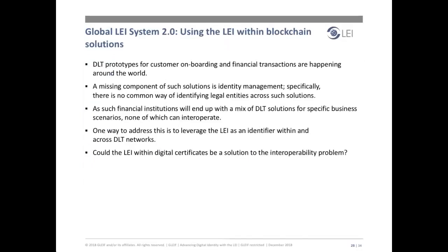Distributed ledger technology prototypes for customer onboarding and financial transactions can be seen around the world. Yet identity management is still a missing component — there is no common way of identifying legal entities across such solutions. As a result, financial institutions will end up with a mix of DLT solutions for specific business scenarios, yet none of them will be interoperable. One way to address this is to leverage the LEI as an identifier within nodes in a specific DLT network or across networks.